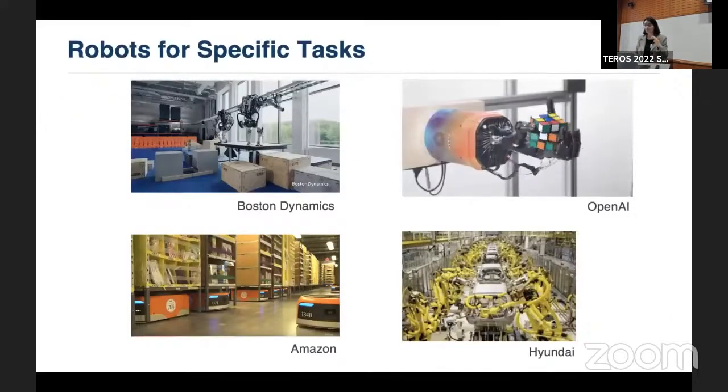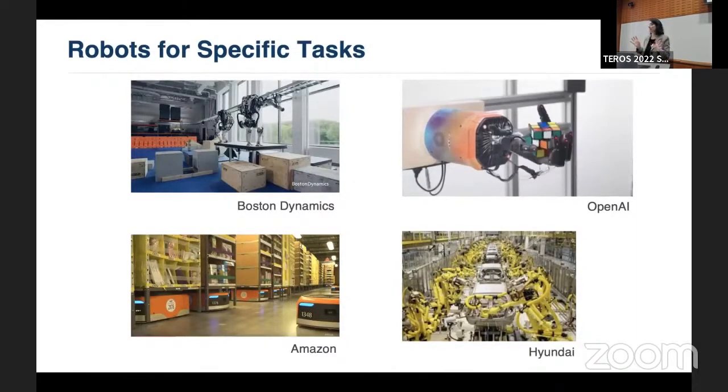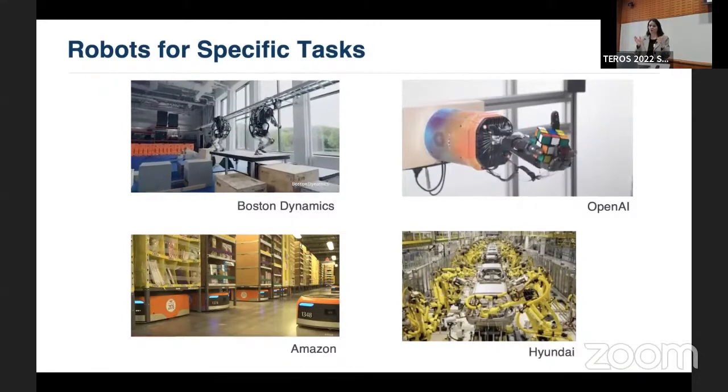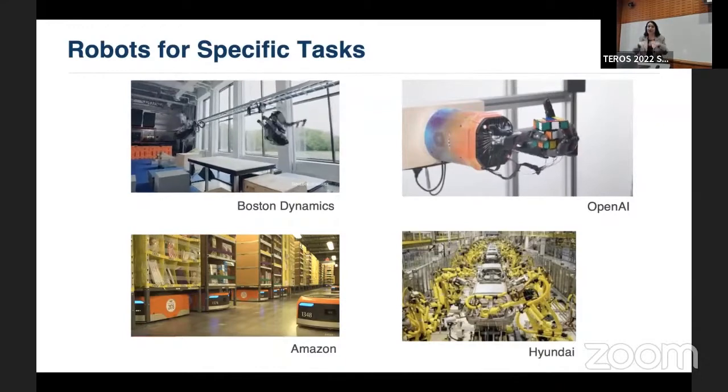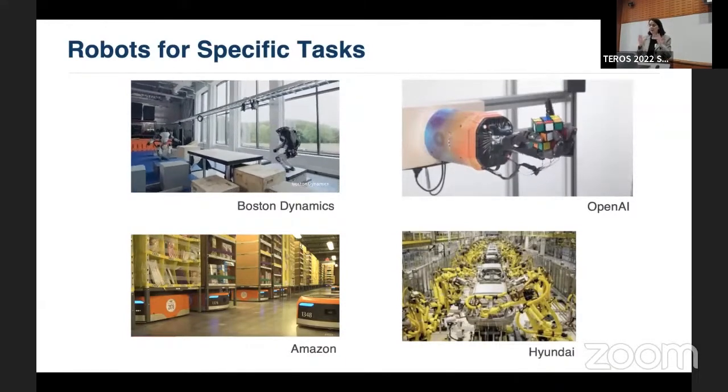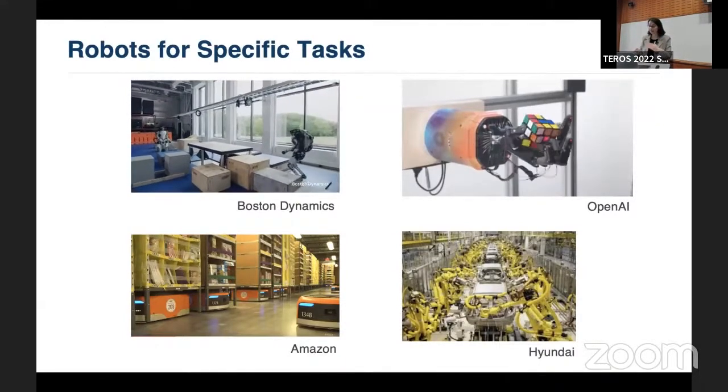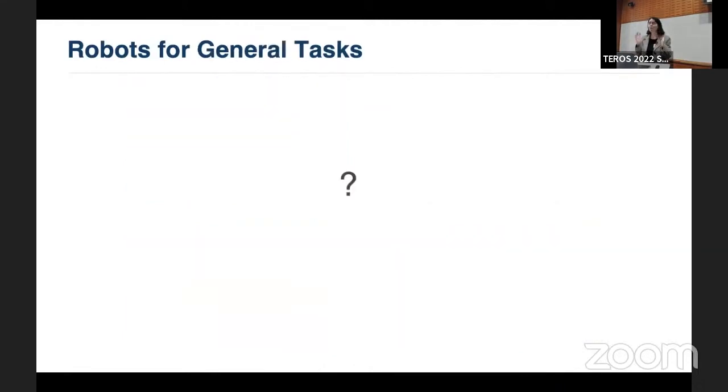I hope you will agree with me that recently we've seen robots do amazing specific tasks. And I'm showing you here the OpenAI hand and the coordinated summer salts of the Boston Dynamics robots. Amazing. Automation has entered the warehouses, manufacturing is clear. But what is happening about our progress for robots for general tasks? There, I don't think we are that advanced. And one of the things that we would like to do in our group is work towards this goal.